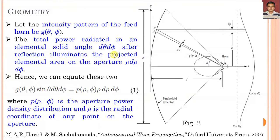We can equate the feed pattern and the aperture power: G(θ,φ)·sin θ·dθ·dφ = P(ρ,φ)·ρ·dρ·dφ, where P(ρ,φ) is the aperture power density distribution. Here ρ is the radial coordinate of any point on the aperture. From the geometry of the paraboloid, R·sin θ = ρ.